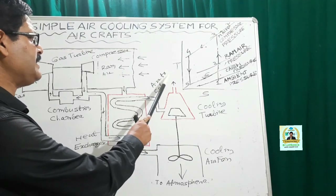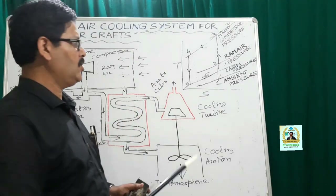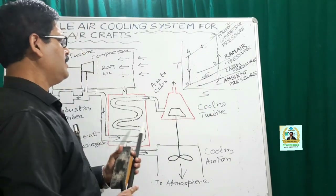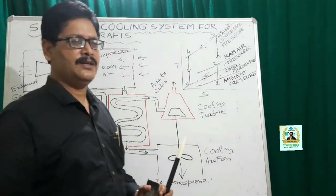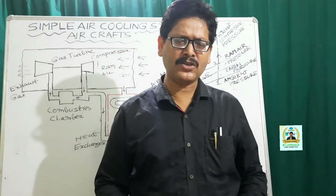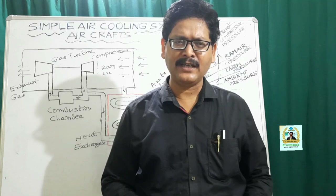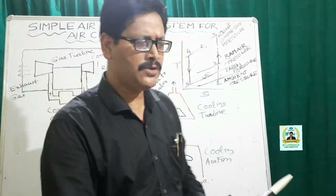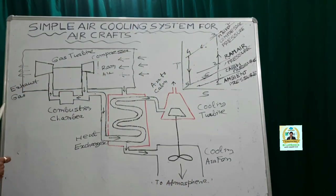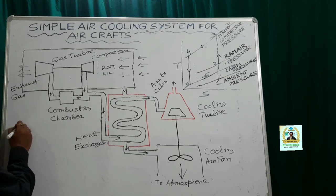Process 5-6 represents the heat absorbed by the air entering the cabin and cockpit. Now we'll consider the work done in the compression as well as the refrigerating effect, so that we can find out the coefficient of performance.